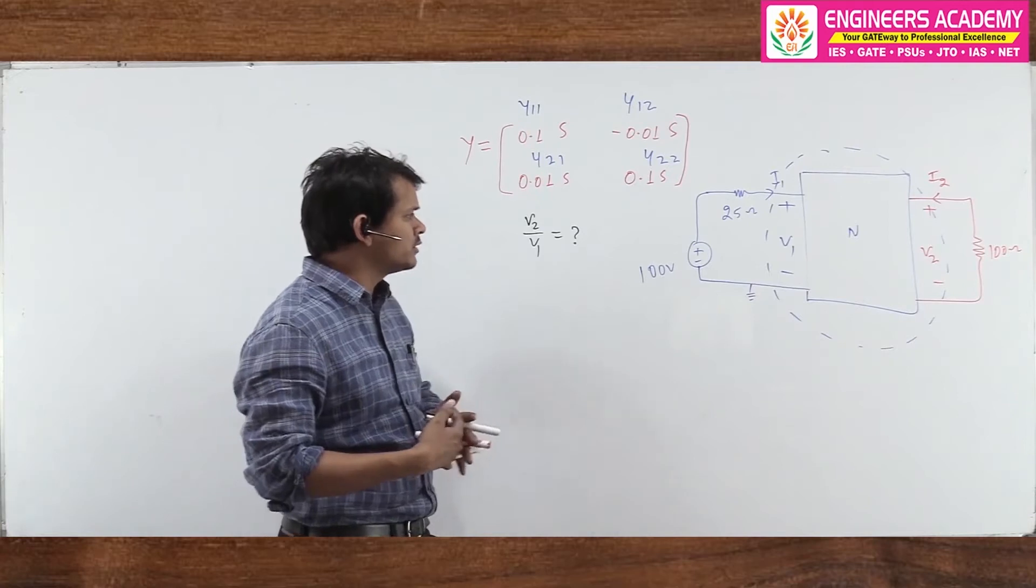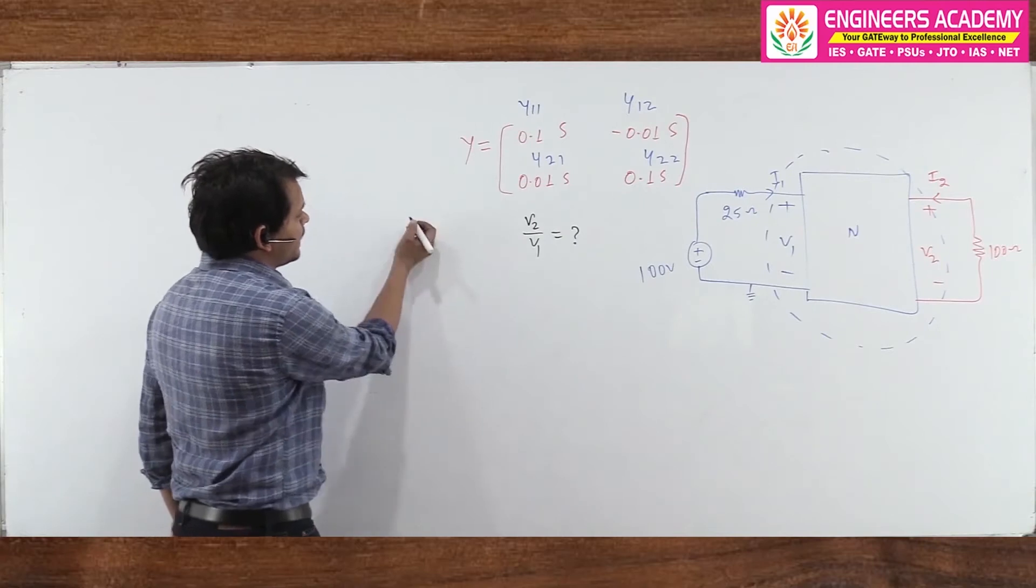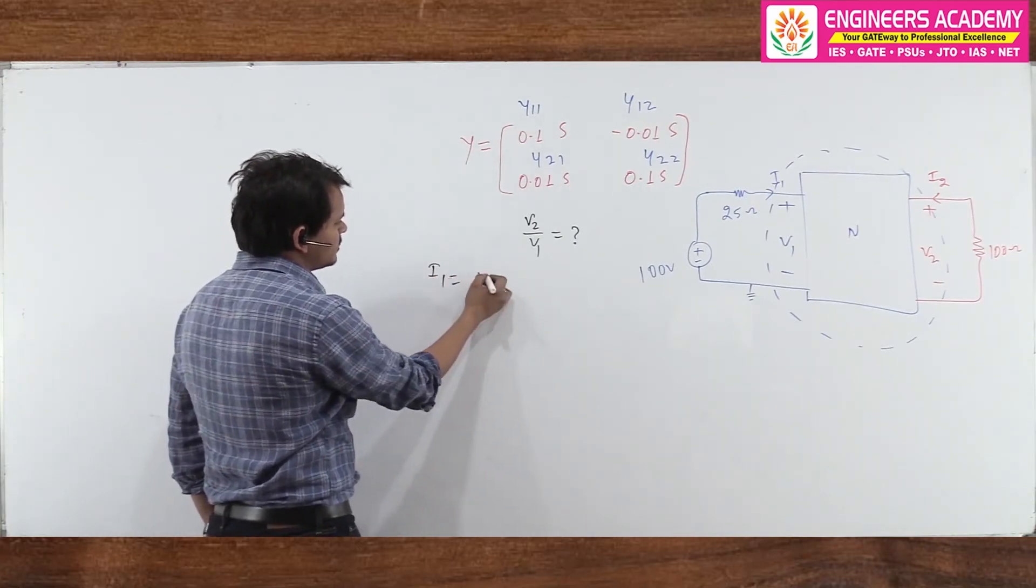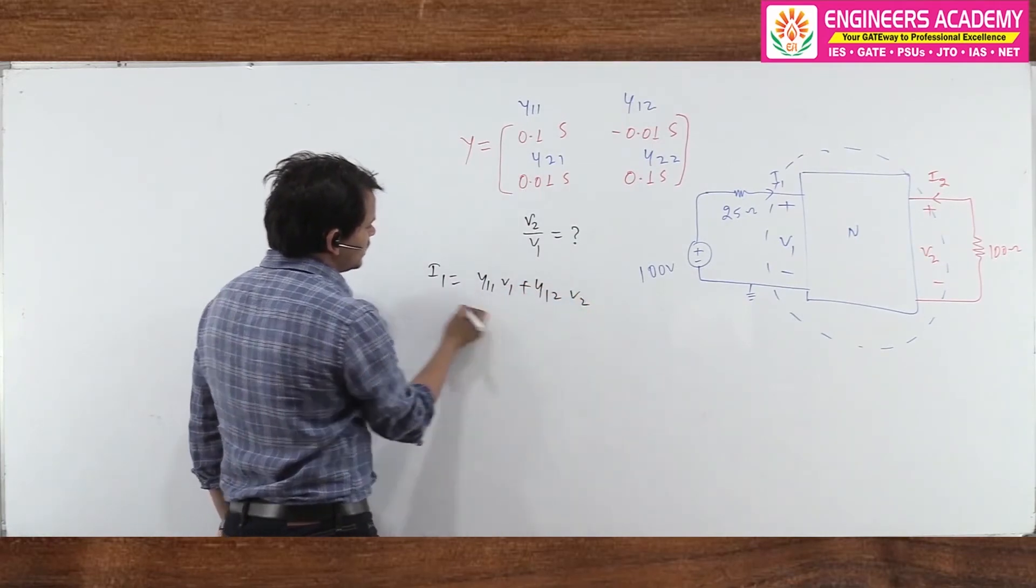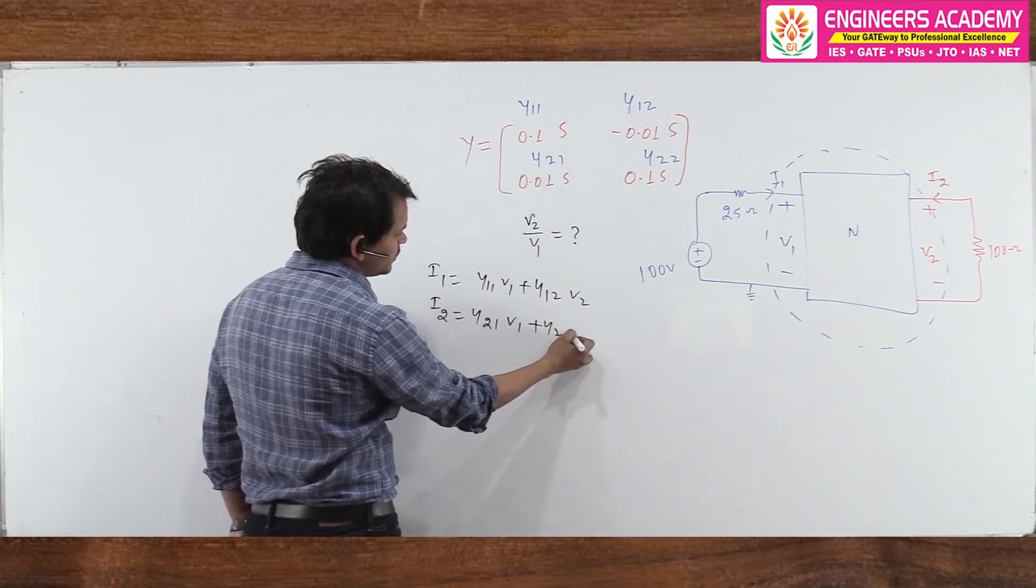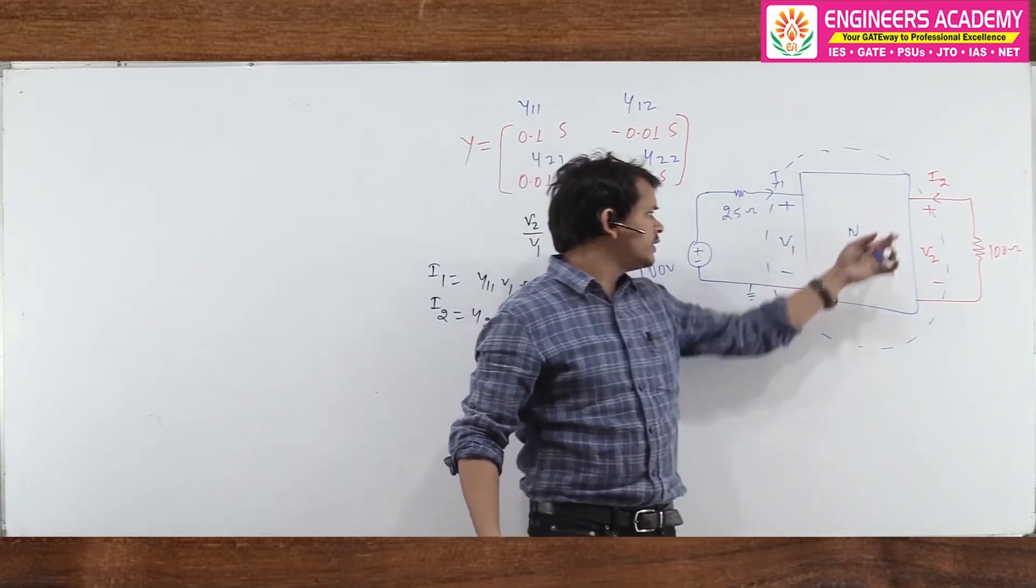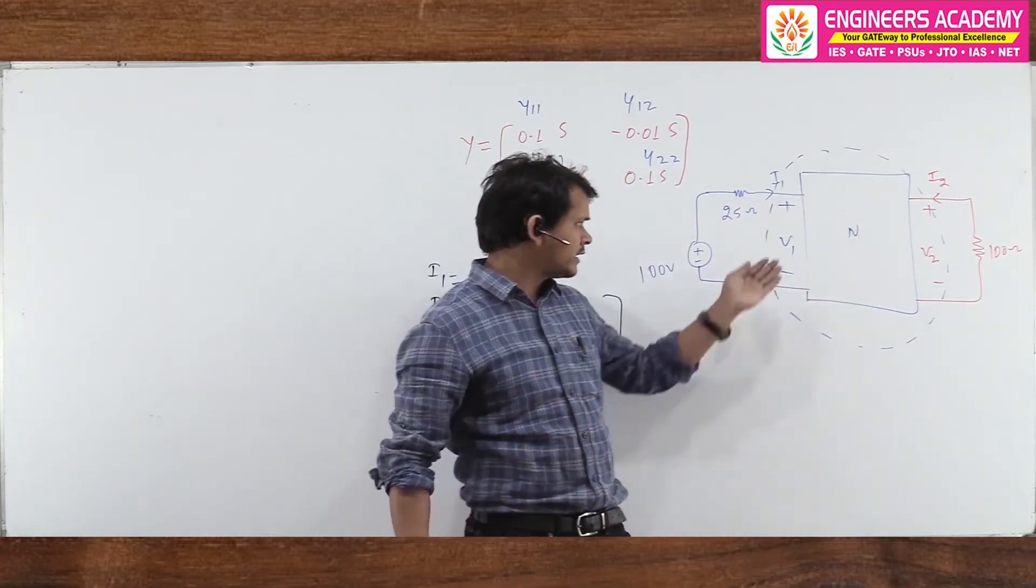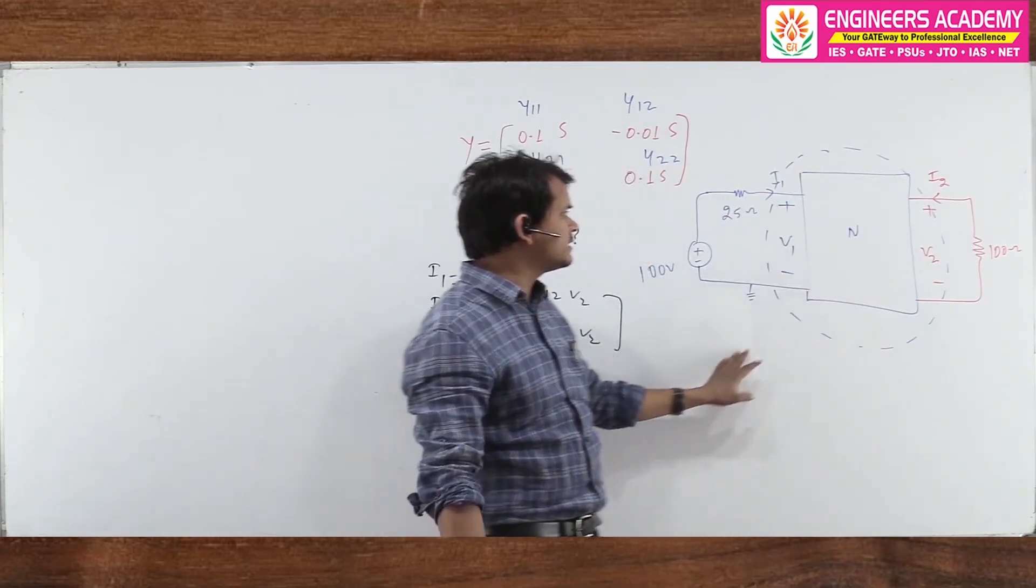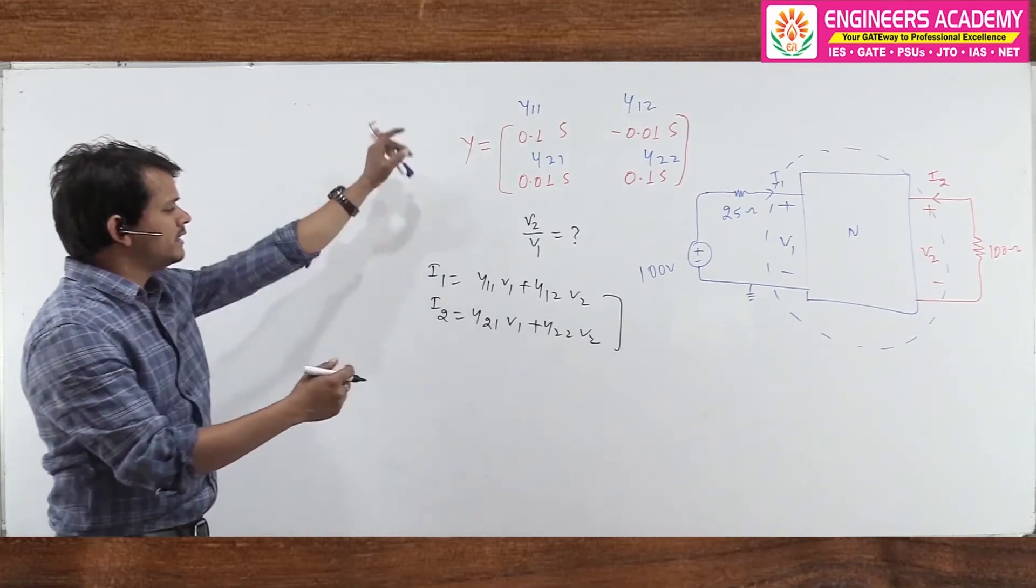Definitely we write two equations. If we take help of these Y parameters and write two equations, what do I write? I just write here, as I know, the Y parametric equation is I1 equals Y11*V1 plus Y12*V2, and I2 equals Y21*V1 plus Y22*V2. So we write two equations. V1, I1, V2, I2. With help of these Y parameters, we can write two mathematical equations.